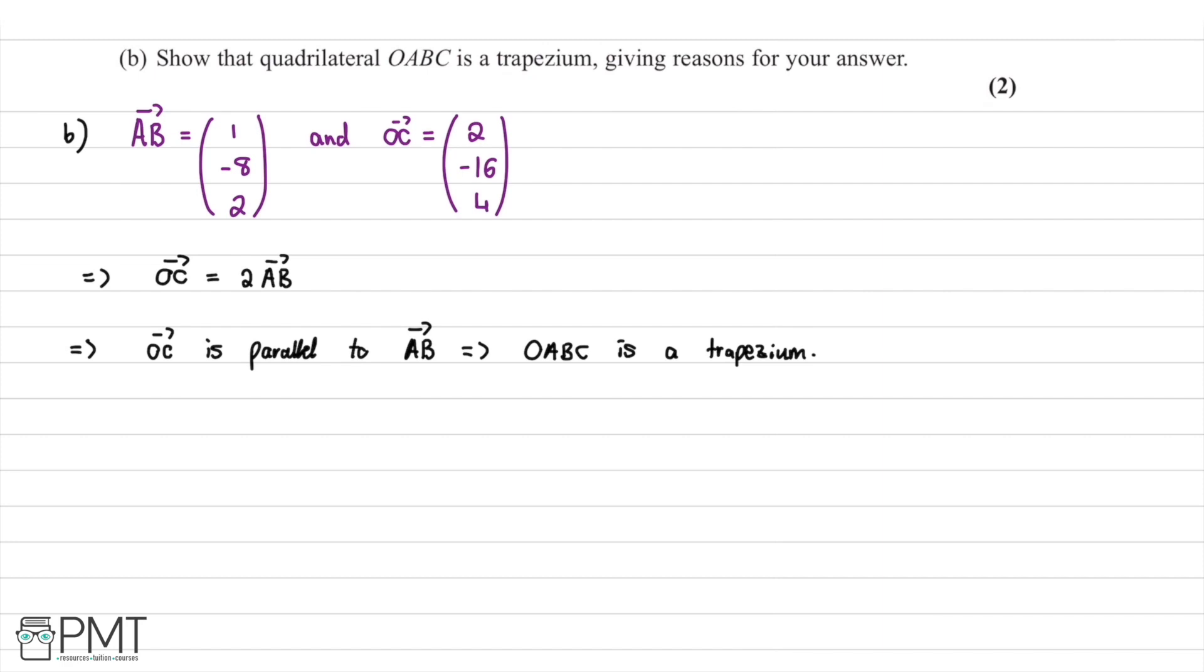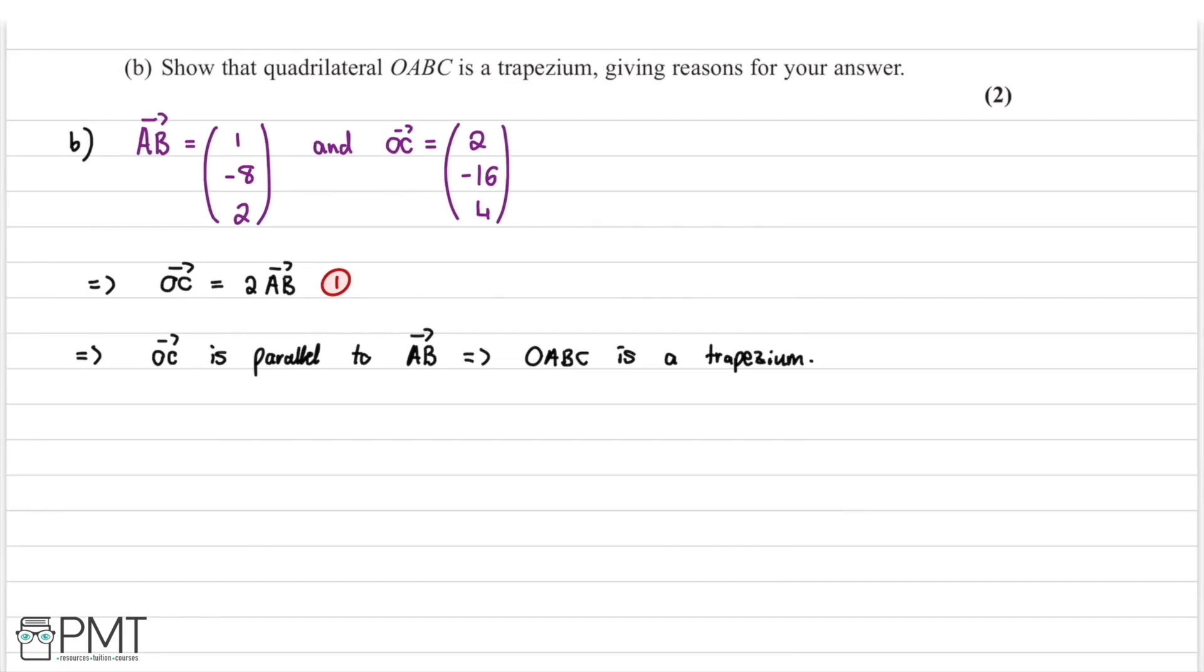That's us completed this question. It was worth two marks. We receive our first mark for identifying the fact that OC is equal to 2 lots of the vector AB. And then we receive our second mark for stating the fact that this means OC is parallel to AB, which means OABC is a trapezium. So we pop our second mark in at this point here, and therefore we've completed this question.